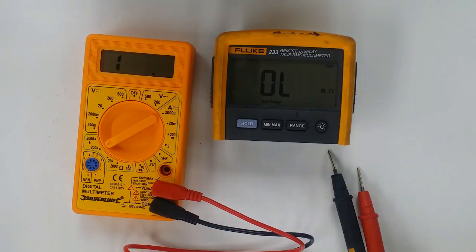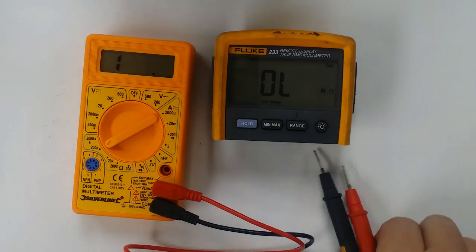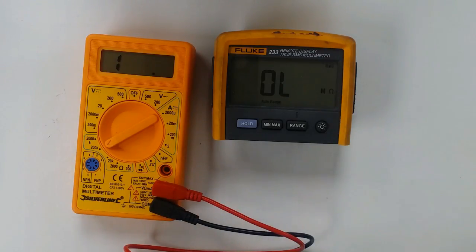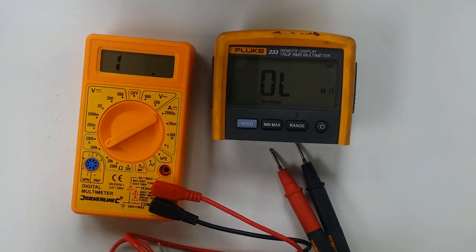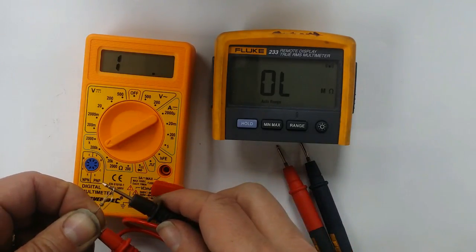200k range. Should we go for 150k? Now you will notice it hasn't got anything fancy like auto ranging, unlike my Fluke. This is a manual ranging meter.